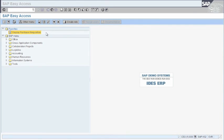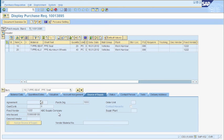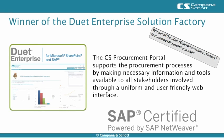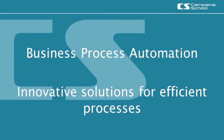Once approved, the purchase order will be transferred to SAP automatically, where it will run through the standard process. The CS Procurement Portal supports the procurement processes by making necessary information and tools available to all stakeholders involved, through a uniform and user-friendly web interface. The CS Procurement Portal has been awarded as the winner of the Duet Enterprise Solution Factory featured by Microsoft and SAP. Campana and Schott Business Process Automation — innovative solutions for efficient processes.